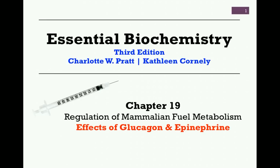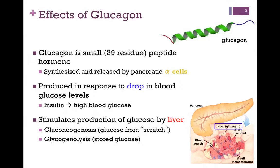In our next lesson from Chapter 19 on the regulation of mammalian fuel metabolism, let's look at the effects of the hormones glucagon and epinephrine. Glucagon is a small peptide hormone, only 29 residues, even smaller than insulin. It is synthesized and released by the pancreas in the islets of Langerhans, and they are released from alpha cells.